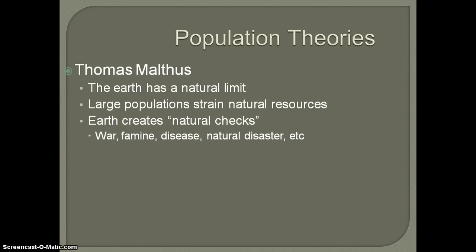The Earth has this natural system for dealing with overpopulation. You have these natural checks — things that naturally kill off large segments of population: whether it's war, famine because there's not enough food, disease, or some natural disaster that wipes people off the face of the Earth. If you think about war — what are most wars fought over? Most wars historically have been fought over natural resources: land, food, water, even if they were masked as something else, like gaining more territory for your people.